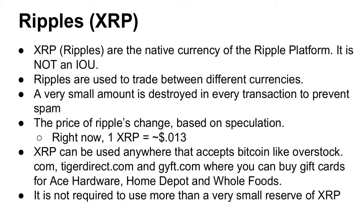Right now, one XRP is about 1.3 cents. XRP can be used anywhere that accepts Bitcoin through what's called the Bitcoin Bridge. Right now you can purchase things anywhere that accepts Bitcoin — overstock.com, tigerdirect.com, gift.com. With gift.com you can buy gift cards for Ace Hardware, Home Depot, Whole Foods, Target, and Walmart. It is not required to use more than a very small reserve of XRP in the system. You don't have to use XRP to use the Ripple system — you can use any currency you want.